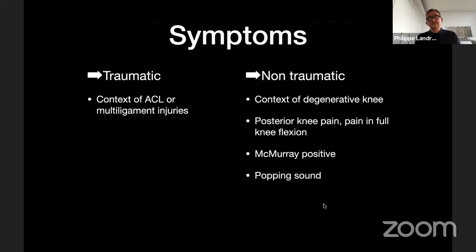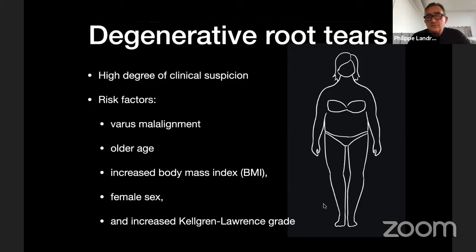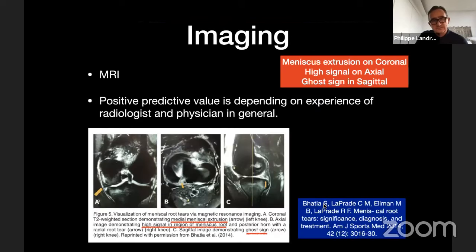The traumatic presentation is in the context of ACL or multiligament injury — it's very difficult to suspect a lateral meniscus root tear in this context, so it must always be explored during surgery and on MRI. When non-traumatic, it's more in the context of a degenerative knee with posterior knee pain, pain in full flexion, and popping sound. Risk factors include varus alignment, older age, increased BMI, female sex, and increased osteoarthritis grade. When these are present with knee pain, we should have a high degree of clinical suspicion to examine the posterior medial meniscus root.